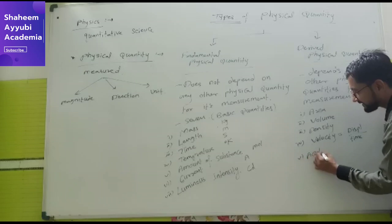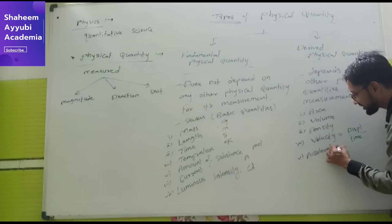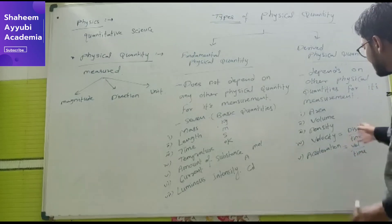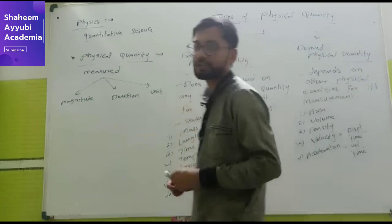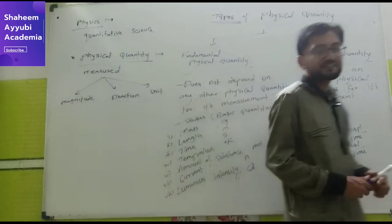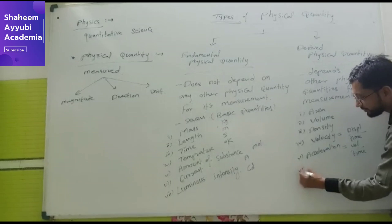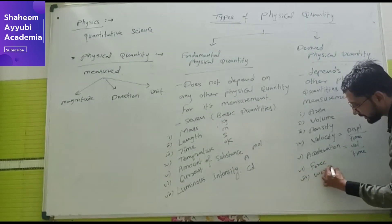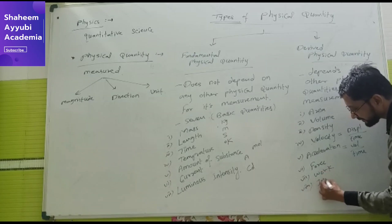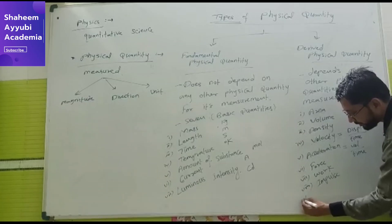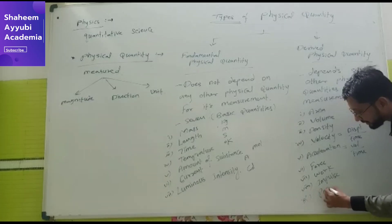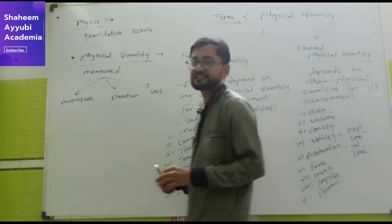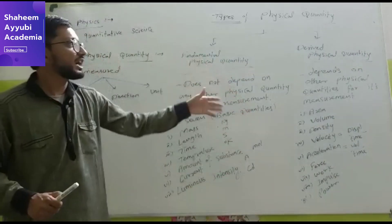Next is acceleration, which is velocity divided by time. Then we have force, work, and impulse — these are also derived physical quantities. All of pressure, energy, and power also come under derived physical quantity.